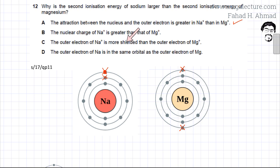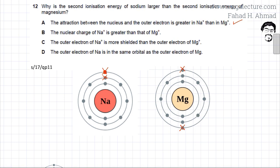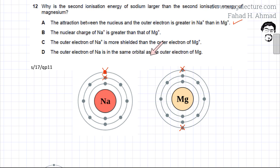Option D states that the outer electron of Na is in the same orbital as the outer electron of Mg, which is incorrect. In Mg, the outermost electron belongs to the third shell, whereas in Na the second electron being removed belongs to the second shell. So option D is also incorrect, which leaves us with option A as the correct answer.